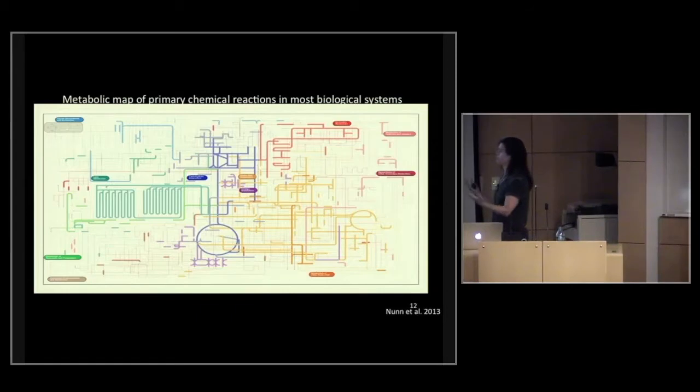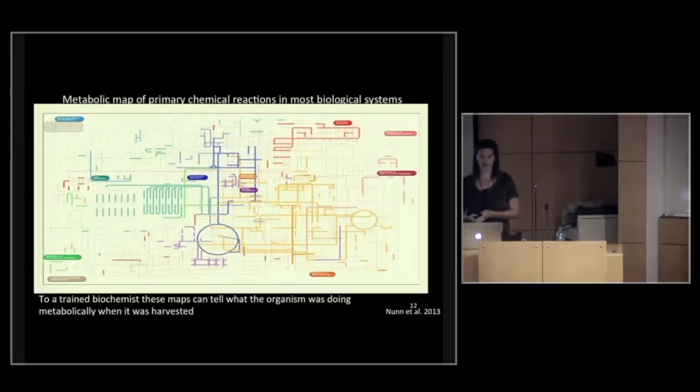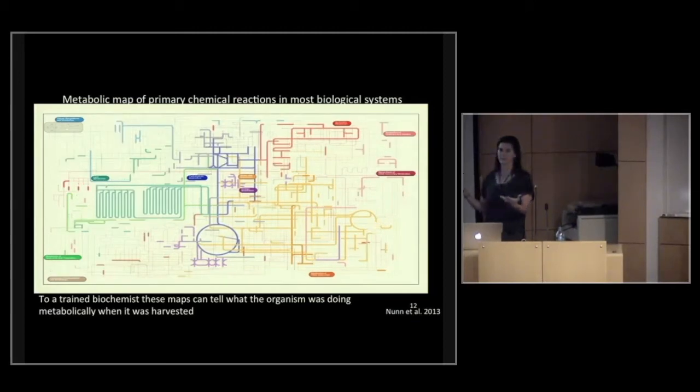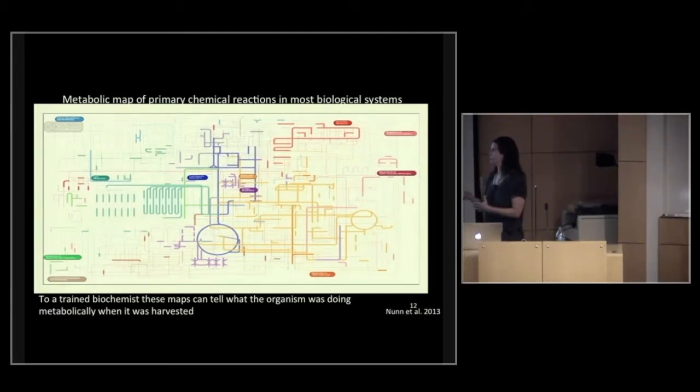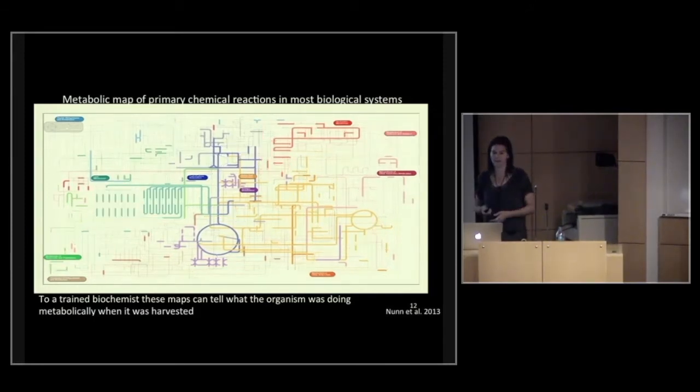Now I've overlaid some actual data. These darker lines represent the proteins that we're observing. And what you can see is that if I compare this to potentially a different cell state, this will begin to flash. We're looking at two different cell states. This happens to be with and without iron. And so to a trained biochemist, these maps begin to tell us a story as to how these organisms are metabolizing or surviving in the environment that we've provided them with.